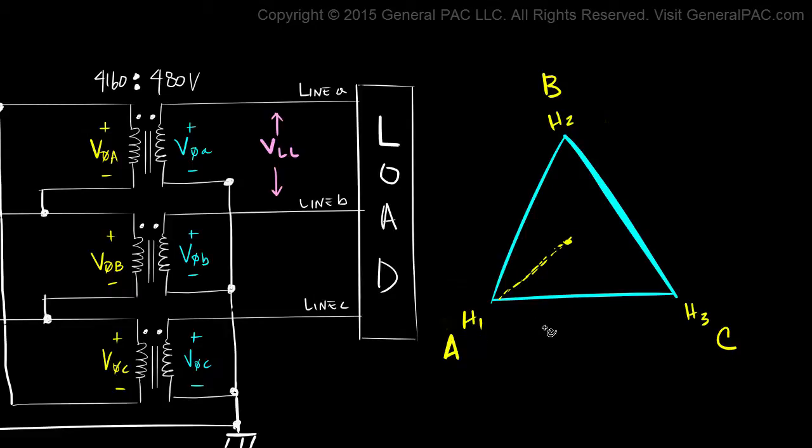So the next question is, what's this dashed line here? This dashed line represents a line to ground voltage. So the next question that we might ask is, what line to ground voltage does it represent?